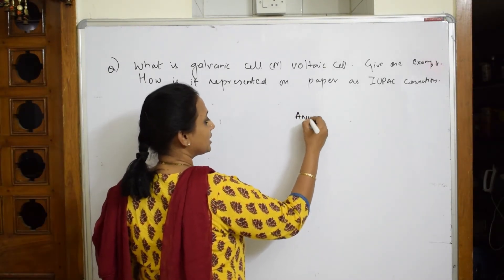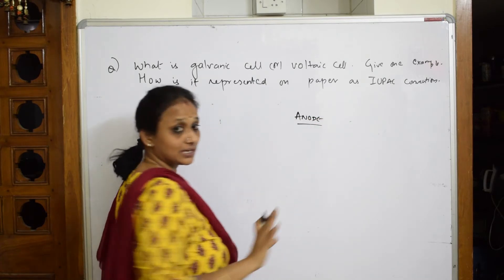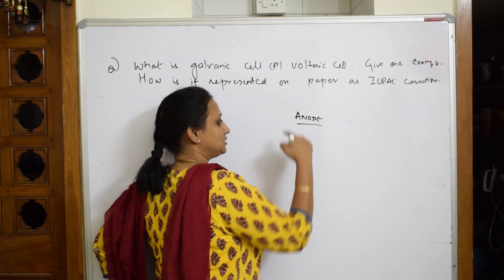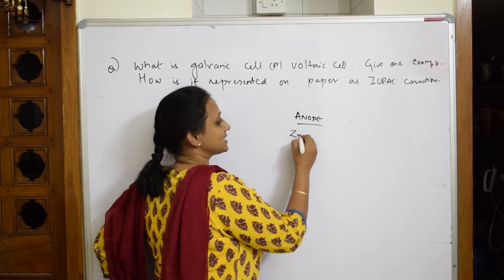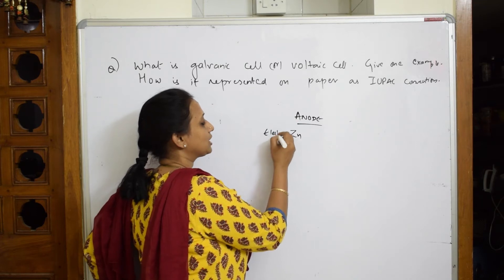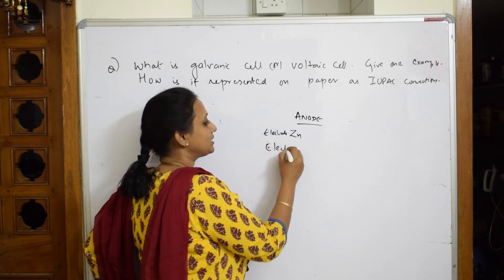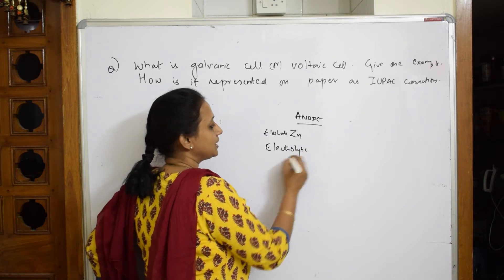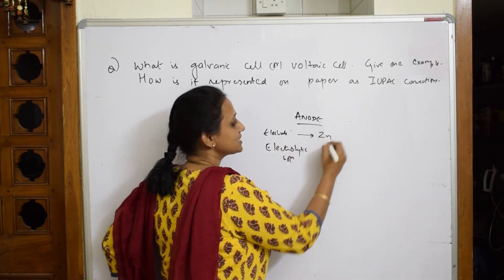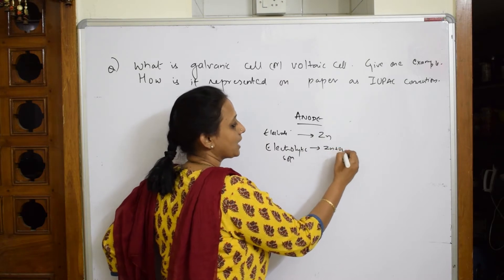So now suppose if I have an electrolytic cell. What am I going to take? I'm going to take under anodic electrode, I'm not drawing the diagram, an anodic electrode. I'm going to take the electrode rod as zinc, and this is your electrode, electrode rod. And along with that I'm going to take an electrolytic solution, the solution of zinc sulfate.